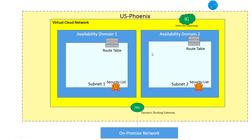Each availability domain has its own subnet. Any instance in these availability domains will have a route table and a security list — essentially a firewall. The security list defines which IP addresses can connect to the instance. The route table specifies which type of connection is allowed — whether the instance can be connected through the internet gateway, the DRG, or both.